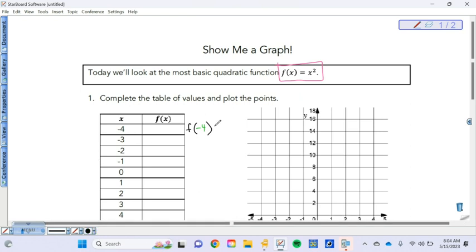So f of negative 4 means that I take negative 4 and plug it in for that x. So it becomes negative 4 squared. And what's negative 4 squared? 16, right? A positive 16, because if I square a negative number, it just becomes positive. Okay, so same with this. x is now negative 3. So f of negative 3 is negative 3 squared. What's negative 3 squared? 9. Good. Okay, I'm going to do one more, and then I'm going to have you fill in the rest.